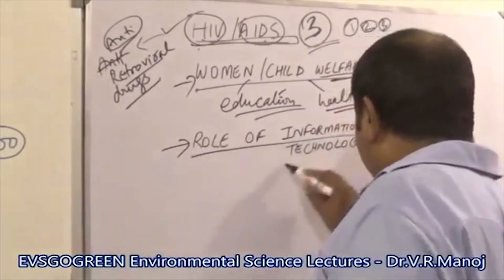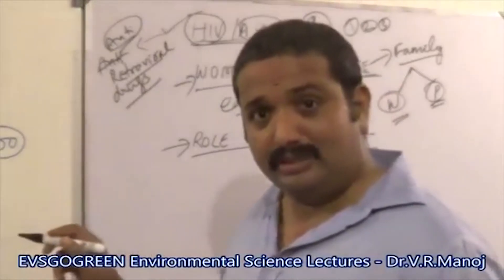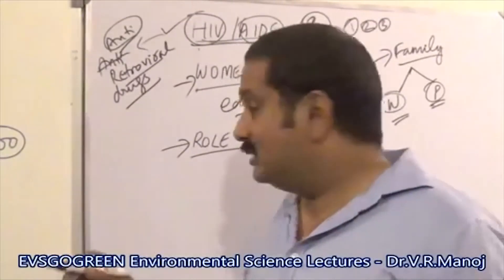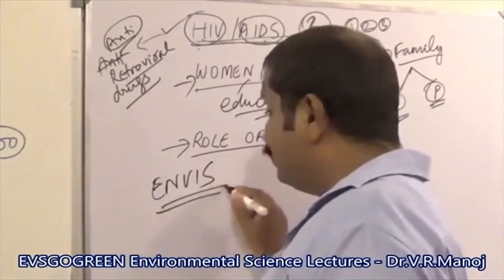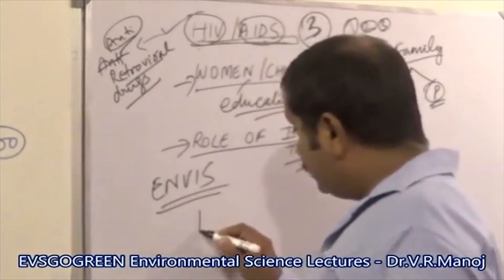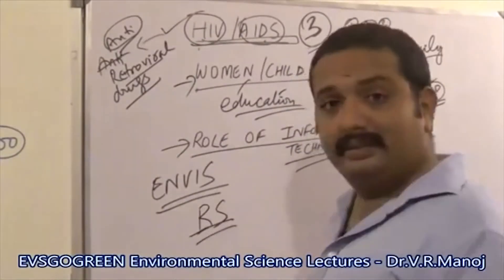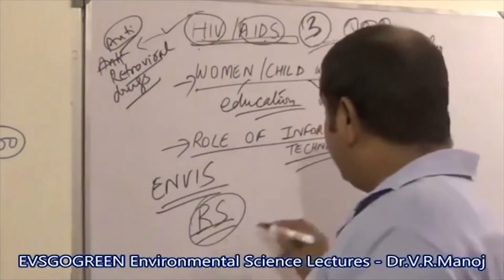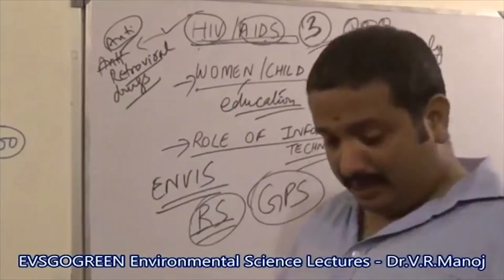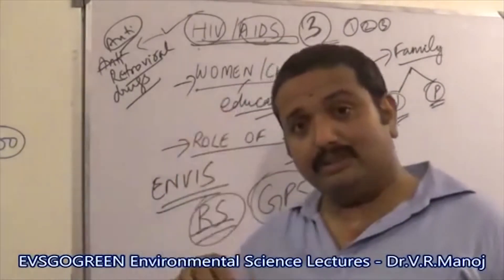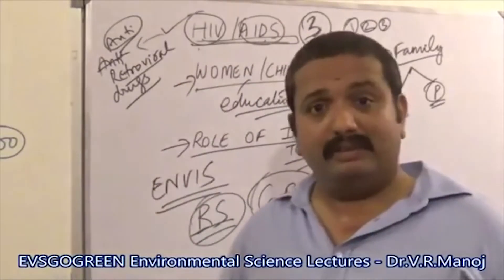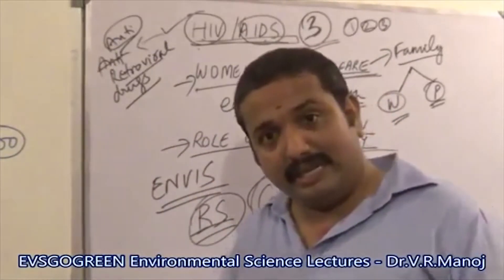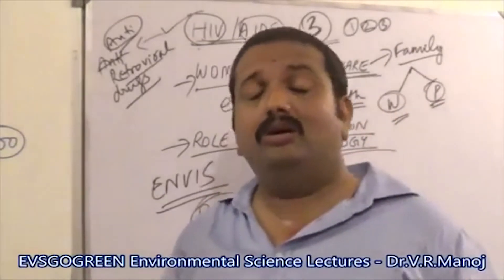One of the most important aspects of the fifth unit is the role of information technology in managing the population and maintaining records. You have databases like ENVIS, which maintains information about the environment. You have remote sensing, where you can sense the status of agriculture from a remote location such as a satellite. And you have GPS, Global Positioning System, where you can determine the exact longitude and latitude of different environmental samples or locations where environmental pollution has taken place.